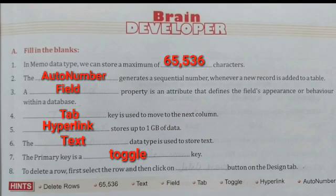Seventh question: The primary key is a blank key. Primary key is a toggle key. If we click it once, primary key is set. If we click again, then primary key is removed. So this is a toggle key.